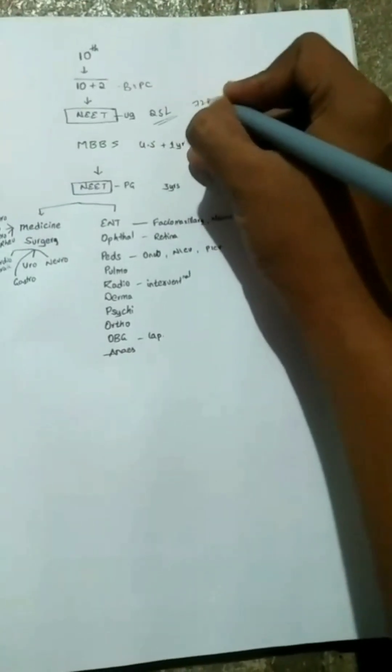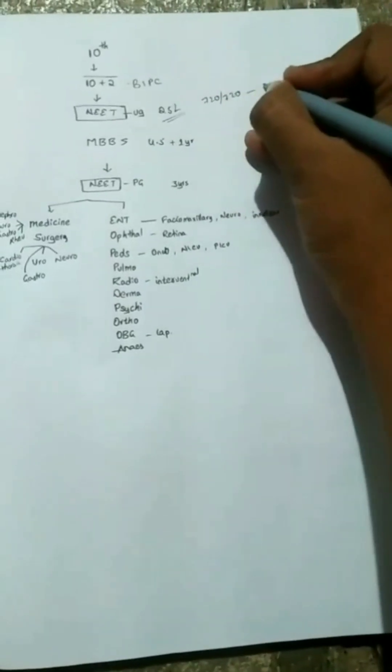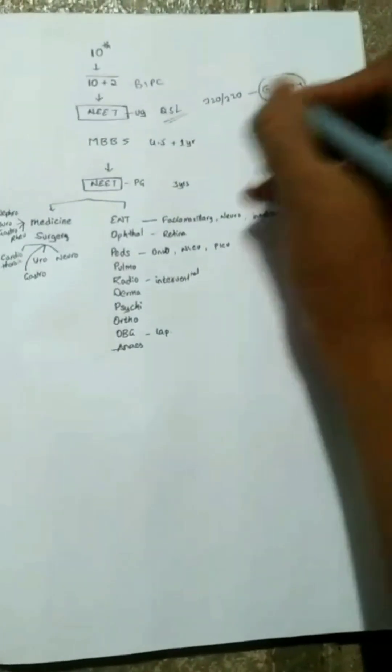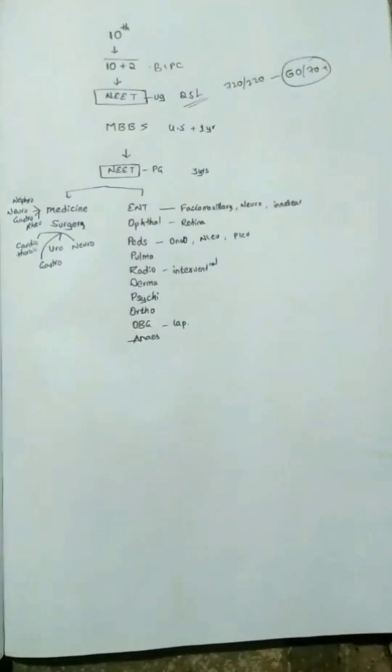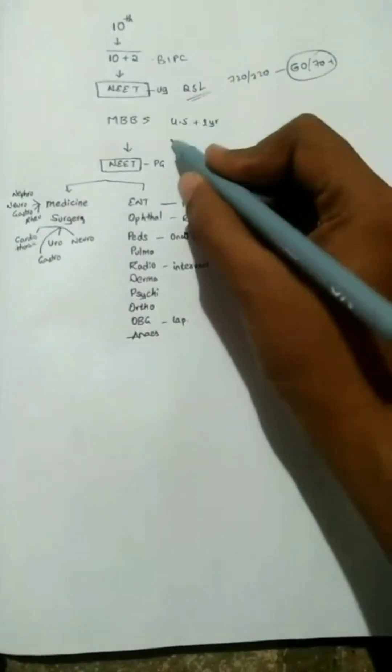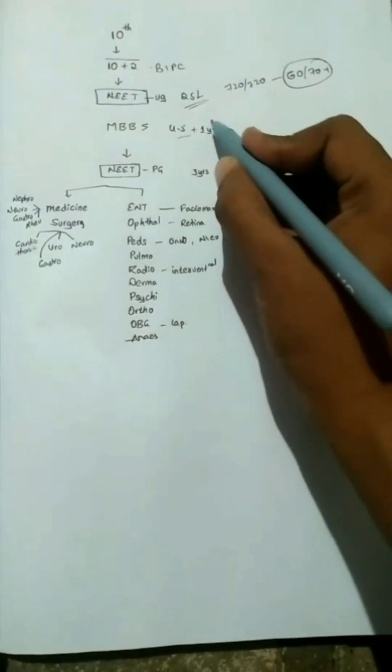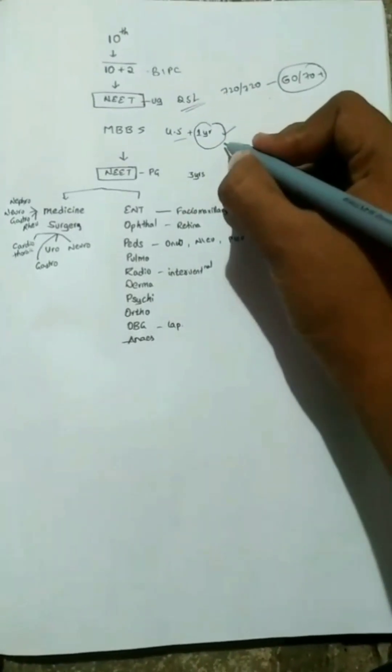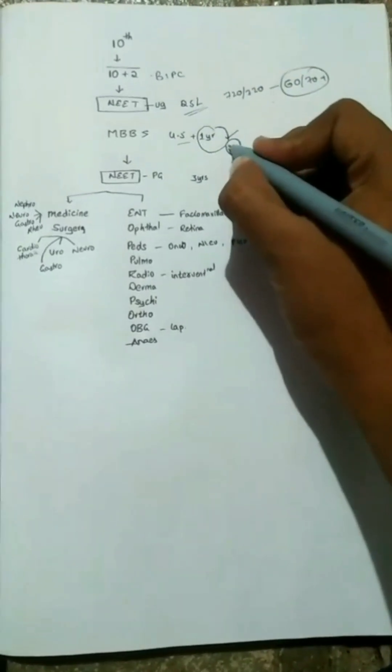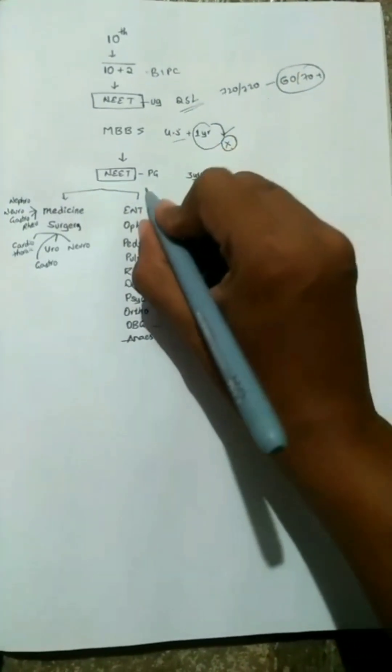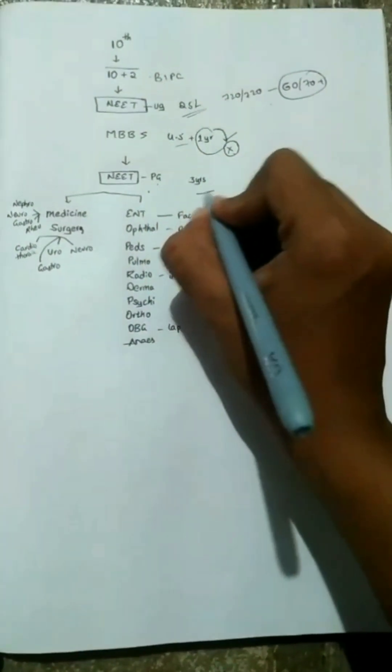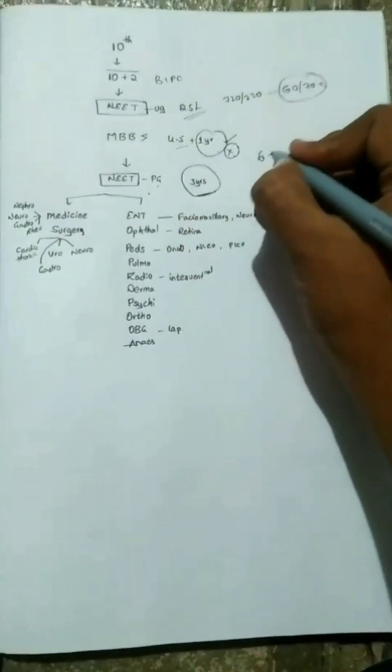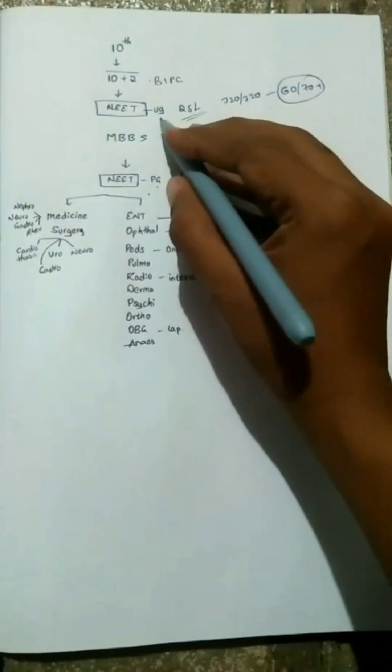And out of that, only around 70 plus members got it. See the competition. After you are selected, you do MBBS for 4.5 years, then internship one year. If you're in government colleges you will get paid, and if you are private you will not get paid. And then NEET PG. NEET PG is three years, so five, six years plus three years is six plus three.